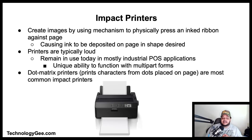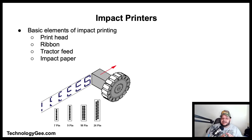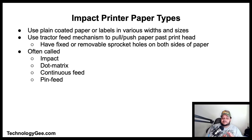Impact printers create an image by physically pressing an ink ribbon against the page, depositing ink in the desired shape. They are typically loud but remain in use in industrial and point-of-sale applications because of their ability to function with multi-part forms. Dot matrix printers, which print characters as patterns of dots, are the most common form of impact printer. Basic elements include a print head, ribbon, tractor feeder, and impact paper. Impact printers use a tractor feed mechanism to pull or push paper past the print head; tractor-fed paper has sprocket holes on both sides and is often called continuous feed or pin-feed paper.